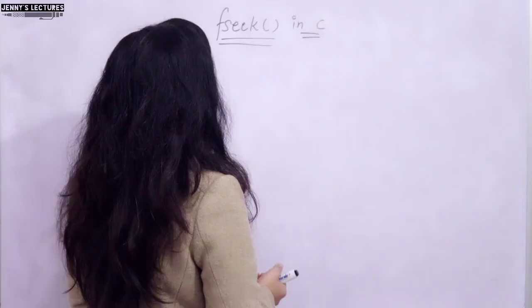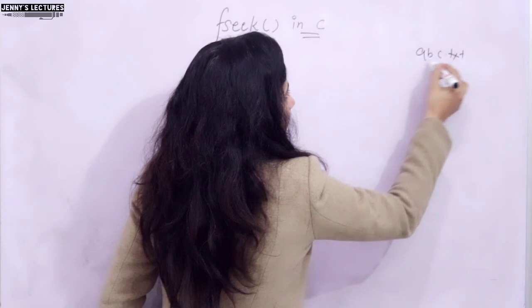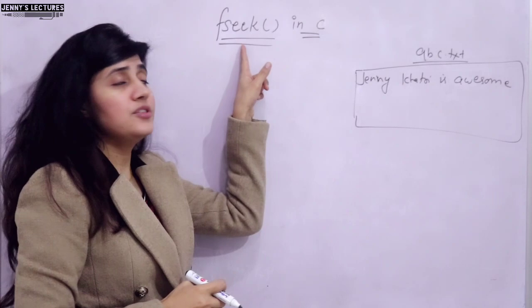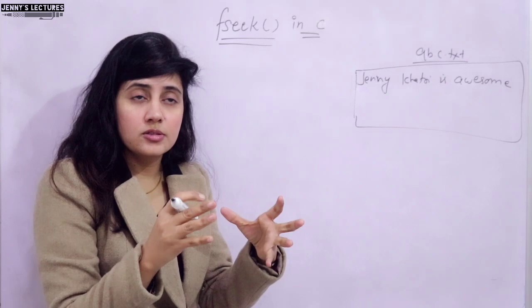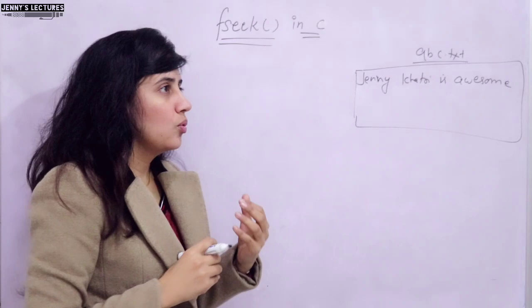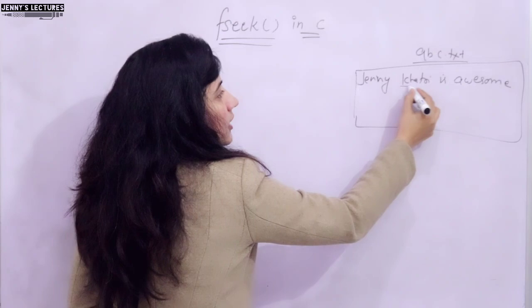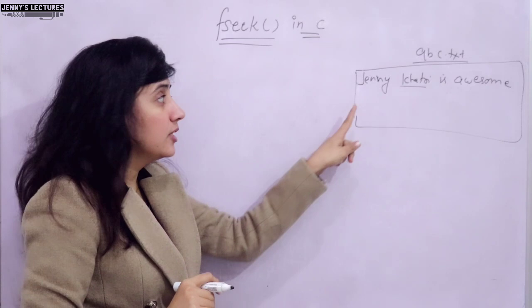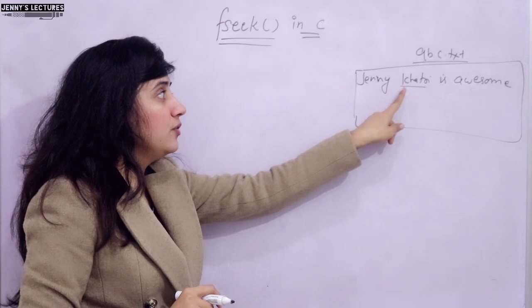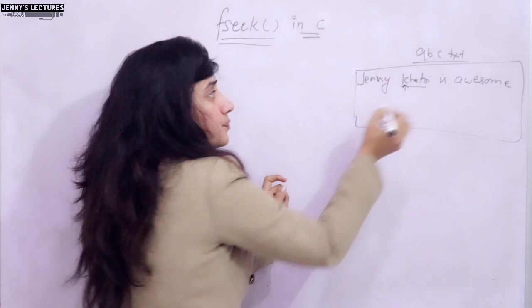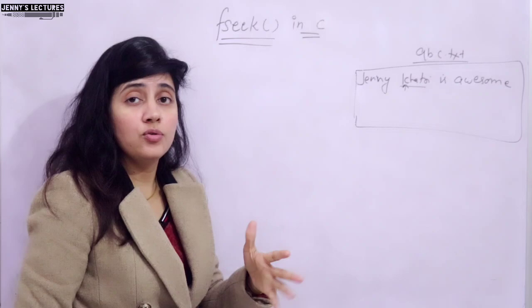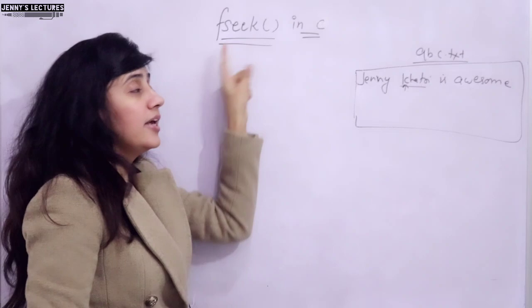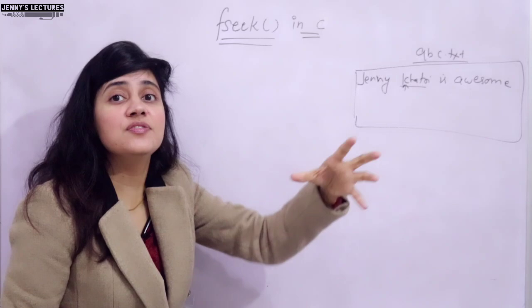Now let us see what is the fseek function. Suppose we have a file abc.txt with some content. The fseek function is used to move the cursor - the file pointer - to a specific position. For example, if I want to read only 'khatri is awesome' and not 'jenny', when you open the file in read mode the cursor is at the beginning. So first you move the cursor from here to a specific position, and then you can read or write from there.